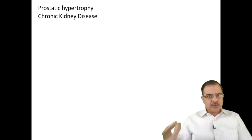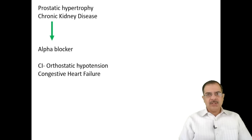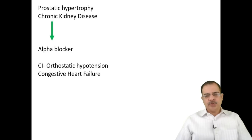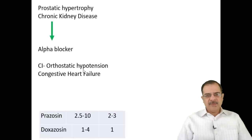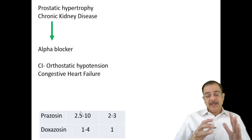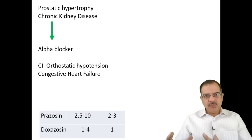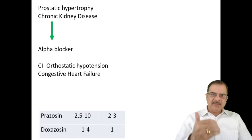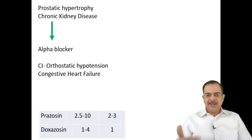For patients with prostatic hypertrophy or chronic kidney disease, alpha blockers can be used and are relatively safe in CKD. Contraindications: frequent episodes of orthostatic hypotension with falls, and congestive heart failure. Dose of prazosin: start at 2.5 mg, given at bedtime — the patient should lie down after taking it to prevent orthostatic hypotension. Dose range is 2.5 to 10 mg; can be given once to three times daily.